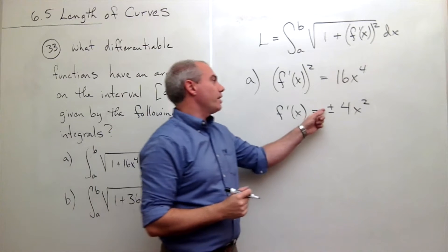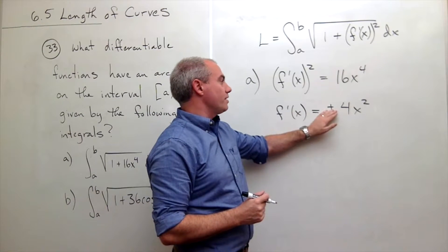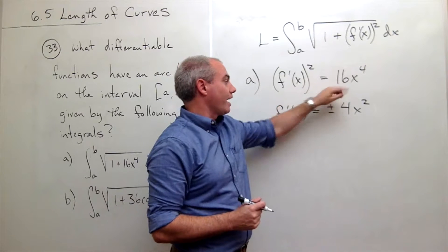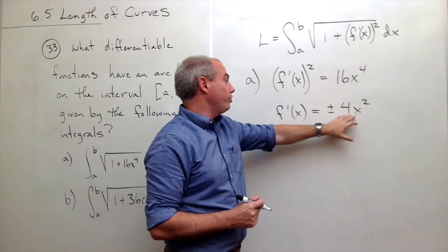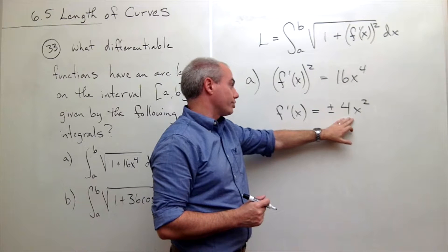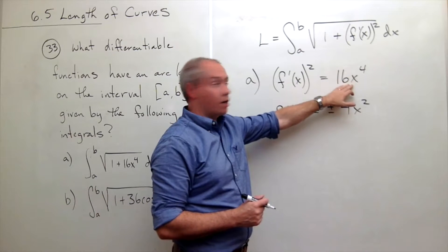And it needs to be plus or minus, because if I took the positive one and squared it, I'd get that guy, and if I took the negative one and squared it, it would be that guy. So both of these derivative functions would produce this term.